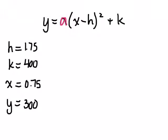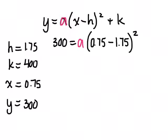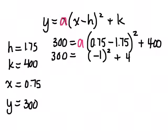So let's plug in all the values. Y, which is 300. So 300 is equal to a. We don't know. Bracket. What's x? 0.75 minus h, 1.75 squared plus k, and k is 400. Using BEDMAS, what's the first thing I should do here? Brackets, right? 0.75 minus 1.75, which is negative 1 plus 400. And let's not forget to put our a here.